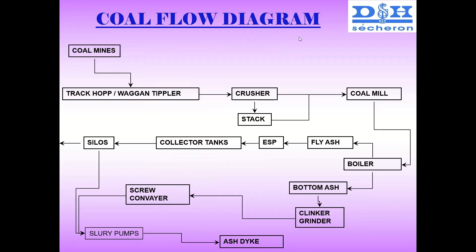This is a brief synoptic flow chart. Coal comes from coal mines to the wagon tippler. From there we have a crusher, from crusher to coal mill. From the coal mill, pulverized coal is sent to the boiler. From the boiler we have fly ash, which goes through the ESP, then to the collected tank and silo. This is a general brief overview of the coal flow diagram in a power plant.